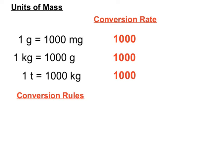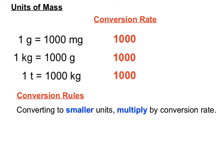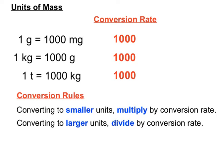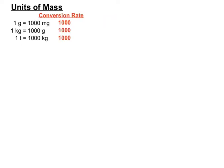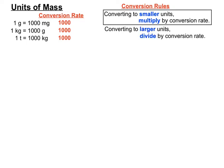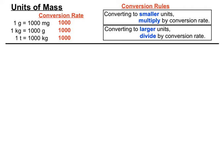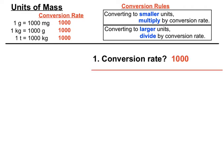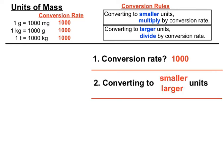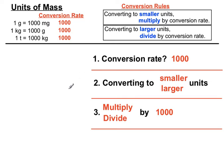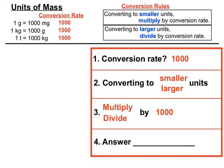The conversion rules generally: if you are converting to a smaller unit, you will be multiplying by the conversion rate. And if you are converting to a larger unit, you will be dividing by the conversion rate. The conversion rates are shown at the top for the different units, and we'll refer to those rules throughout this video. They all have a conversion rate of a thousand, but we will have to decide whether we're converting to smaller or larger units to determine whether we multiply or divide, and from that we'll get our final answer.